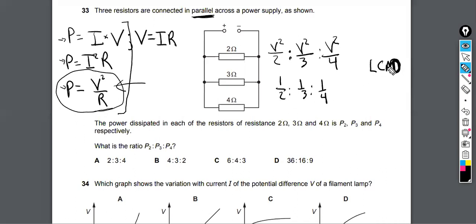What's the least common multiple of 2, 3, and 4? 12, right? So multiply everything by 12. 12 times a half is 6, 12 times a third is 4, 12 times a fourth is 3. 6 to 4 to 3, same thing as a half to a third to a fourth. 6 to 4 to 3 ratio is answer C.